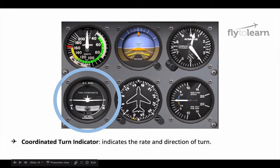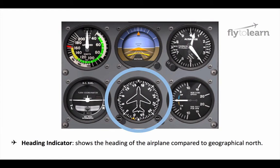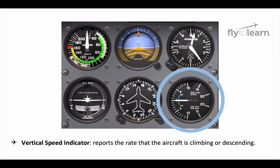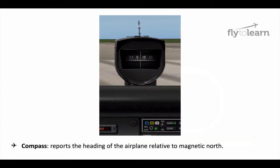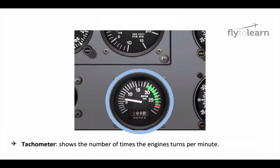Your coordinated turn indicator indicates the rate and direction of turn as you fly. The heading indicator shows the heading of the airplane compared to geographical north. The vertical speed indicator reports the rate that the aircraft is climbing or descending. At the top of your instrument panel, you'll see a compass, which reports the heading of the airplane relative to magnetic north. Towards the bottom of your instrument panel, you'll see the tachometer, which shows the number of times the engine turns per minute.